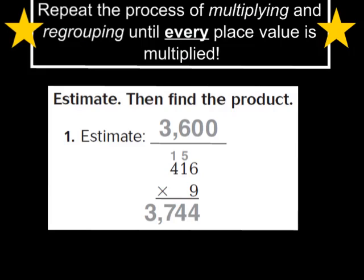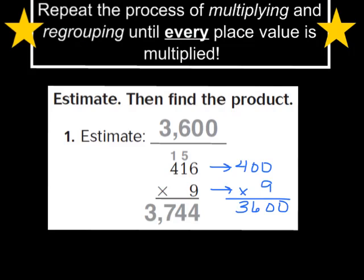If I'm going to estimate, the first thing I'm going to do is think, what could I turn that 416 into that would be a much easier number to work with? I know that 416 is close to 400, so I'm going to turn that into 400. I'm going to keep my 9 the same because 9 times 4 is a basic fact I should know. Since 9 times 4 is 36, and behind 400 there are two zeros, I add two zeros to 36. So my estimate turns out to be 3,600.